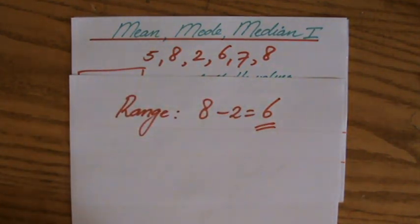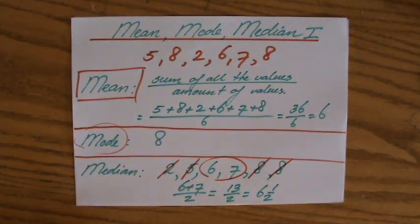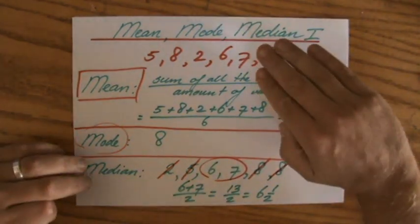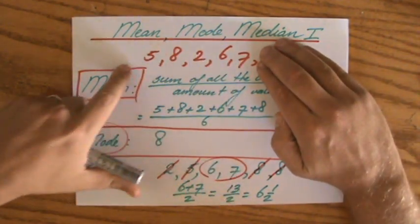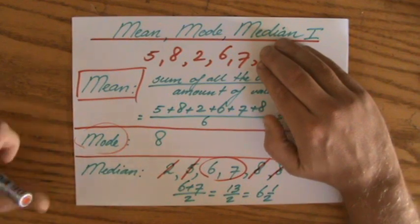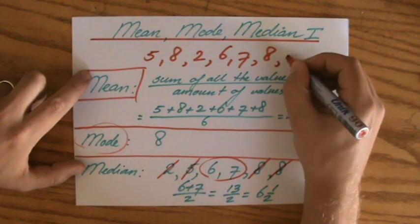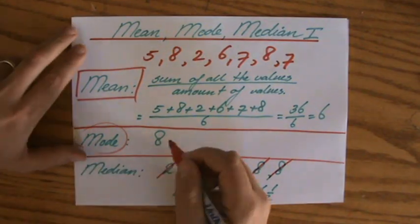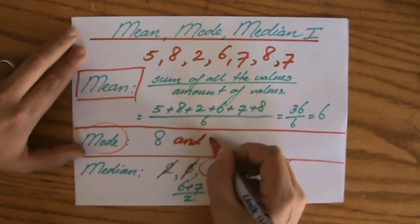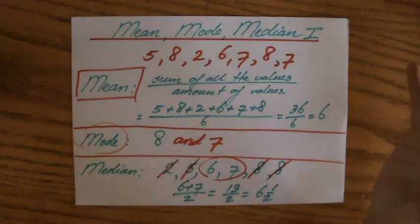Two more things about the mode: if that eight weren't there, I would have no mode, because all pieces of information occur only once. But if I had another seven in the dataset, my mode would be both eight and seven — I would have two modes. That's perfectly fine and normal. You can have two or three modes, or no mode at all. If there is no mode, don't say zero — say 'no mode.'